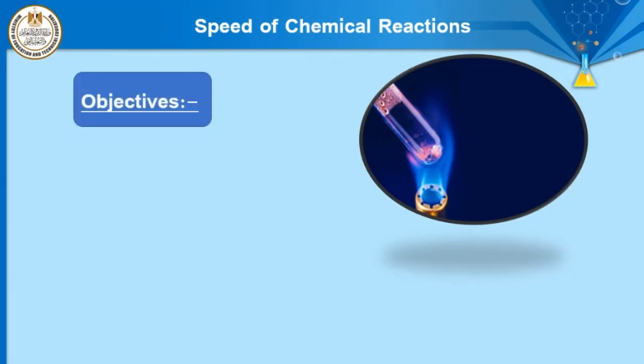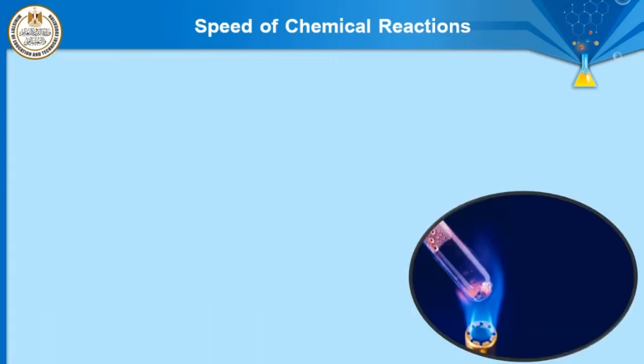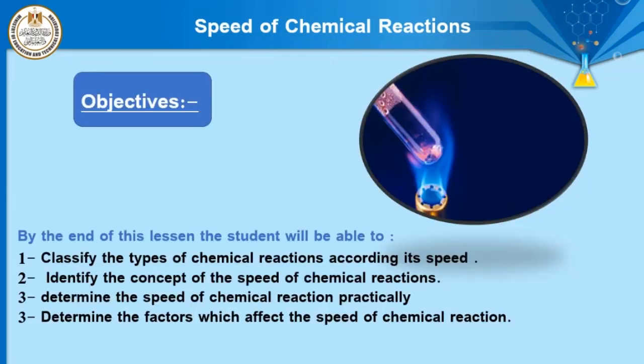In this lesson, titled 'Speed of the Chemical Reactions,' we will talk about some objectives. Number one: classify the types of chemical reactions according to their speed. Number two: identify the concept of the speed of the chemical reaction. Number three: determine the speed of the chemical reaction practically. Number four: determine the factors which affect the speed of the chemical reaction.